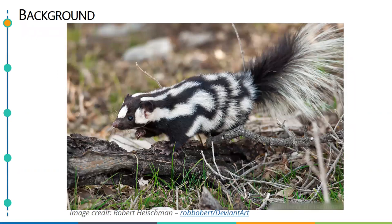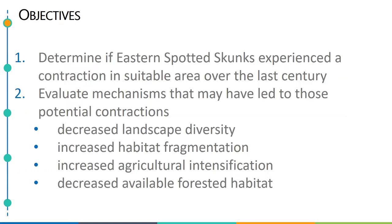As a result, these methods might be particularly beneficial for species like the eastern spotted skunk, which have a lot of uncertainty surrounding changes in their populations and distribution through time, and they also tend to be highly cryptic. So we sought to determine if eastern spotted skunks experienced a contraction in suitable area over the last century, and also evaluate mechanisms that may have led to these potential contractions — specifically examining decreased landscape diversity, increased habitat fragmentation, increased agricultural intensification, and decreased available forested habitat as drivers of environmental suitability.